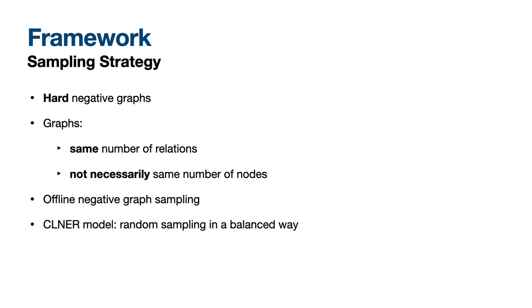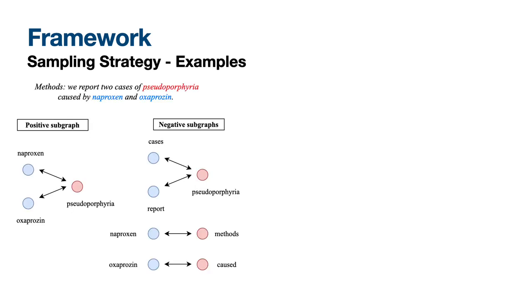In the CLNR model, random sampling is executed at the batch level in a balanced way. Let's return to our example to explain better the graph sampling strategy. On the left, we have the positive subgraph for this particular sentence, and on the right, we have two negative subgraphs. In the first one, we can see that the adverse effect node is correct, but the drug nodes are wrong as we randomly sampled the words cases and report. This is the sampling strategy for the CLGS model.